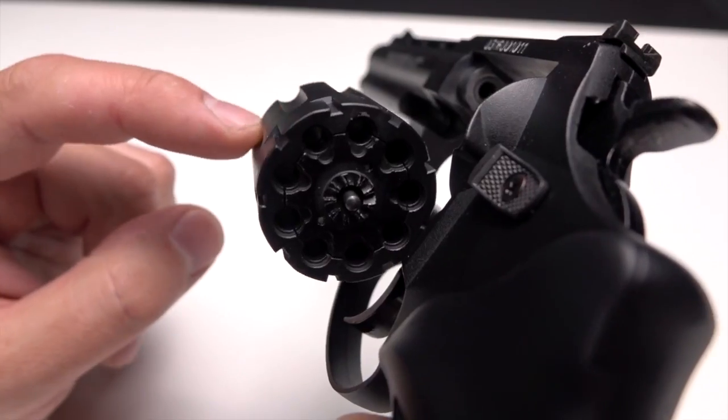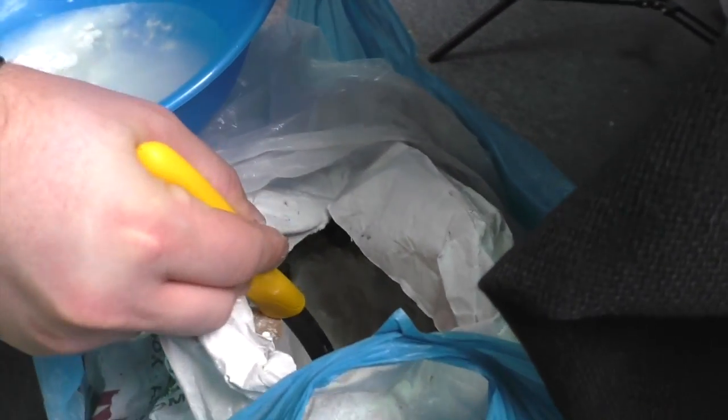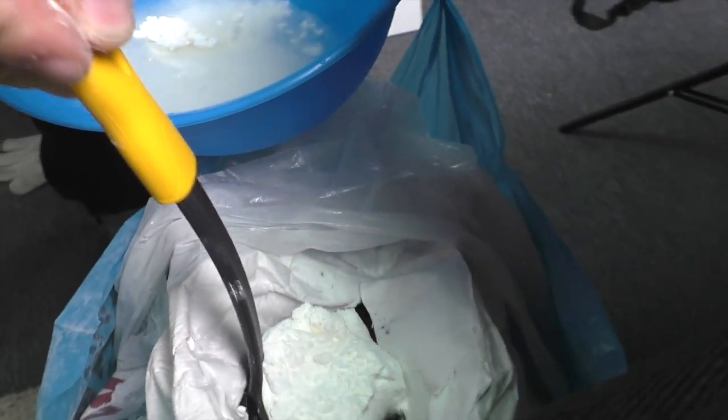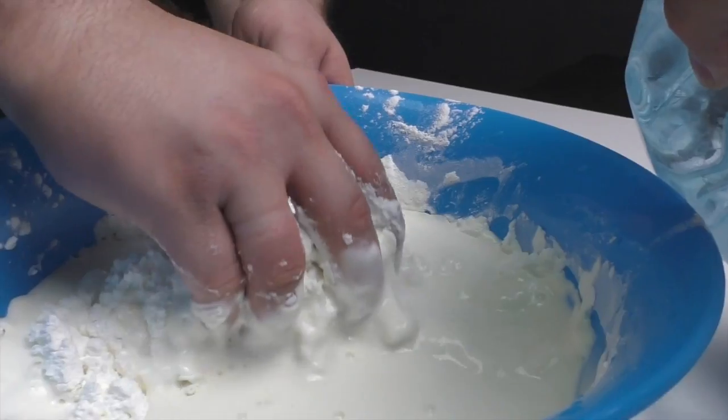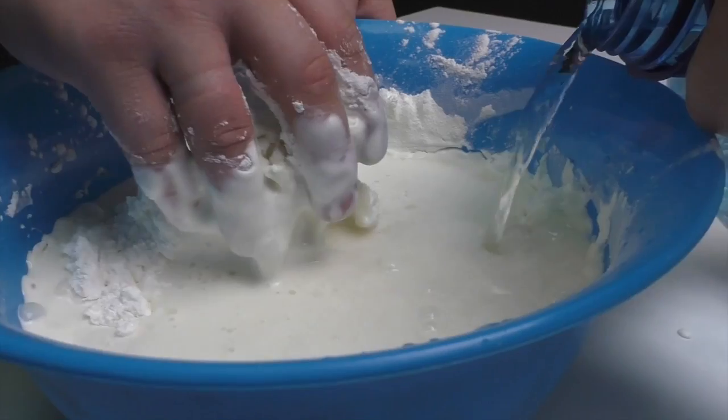Must say I really love its looks. The recipe of oobleck is as simple as always. Corn starch and water. Then you just carefully mix it.